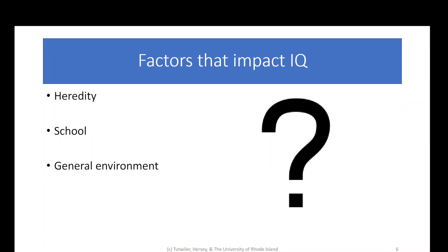There are some problems with the way we measure IQ, and a lot of things that impact IQ. For example, heredity — genetics impacts literally everything that you are, so naturally it would also impact your intelligence quotient. School also impacts it: a good school, you're likely to have a higher IQ; a bad school, a lower IQ. General environment also has something to do with it — were you raised in an environment conducive to learning? Do you have enough food to eat? Are you getting enough sleep? All these things we know are important to learning also impact IQ, which is why it's kind of silly to look at IQ as a static, stable thing that doesn't change over your lifetime, because other factors may influence it beyond just how smart your brain is.